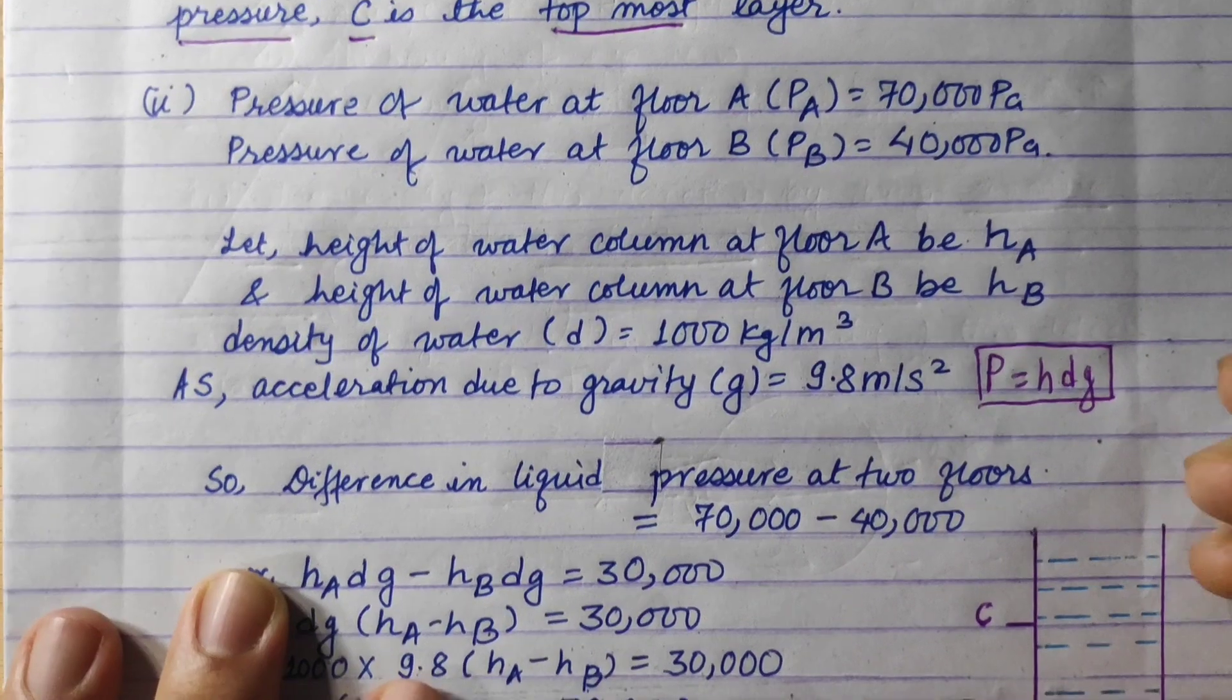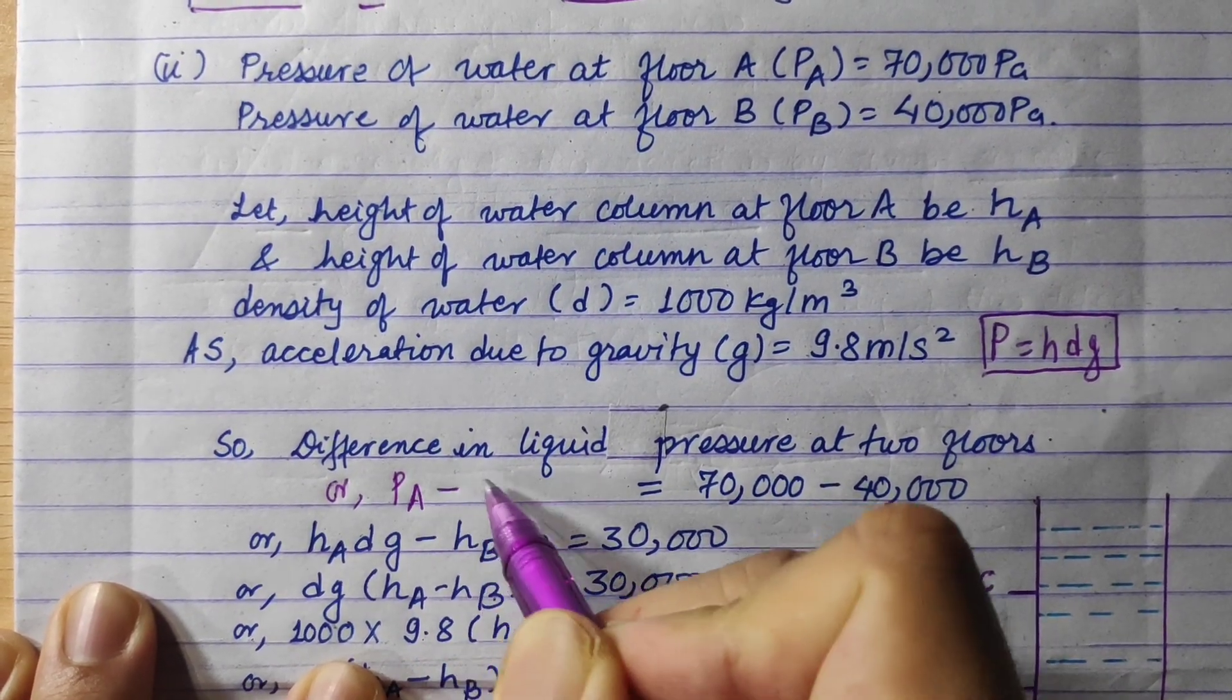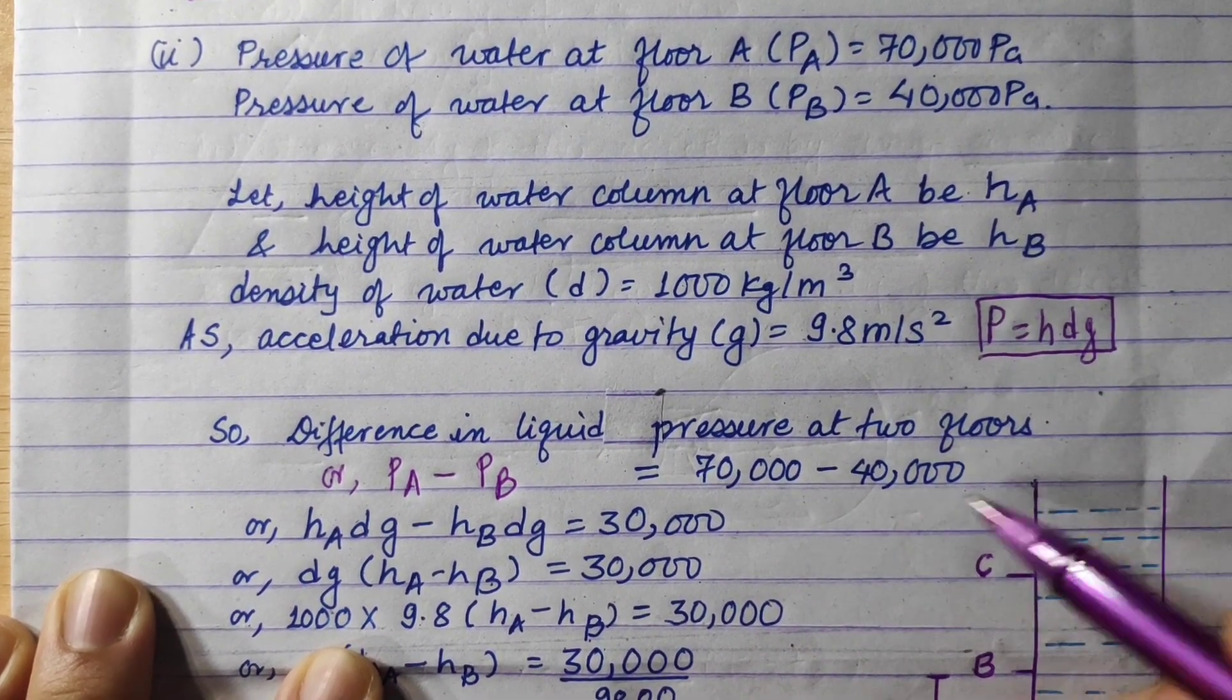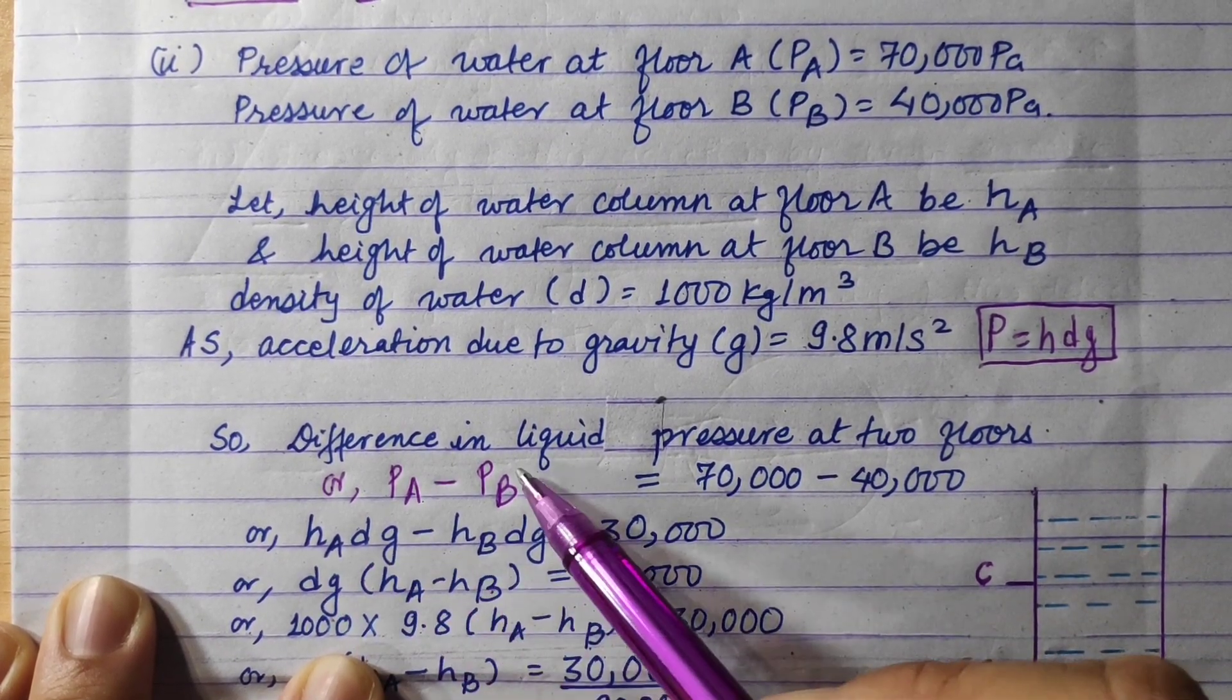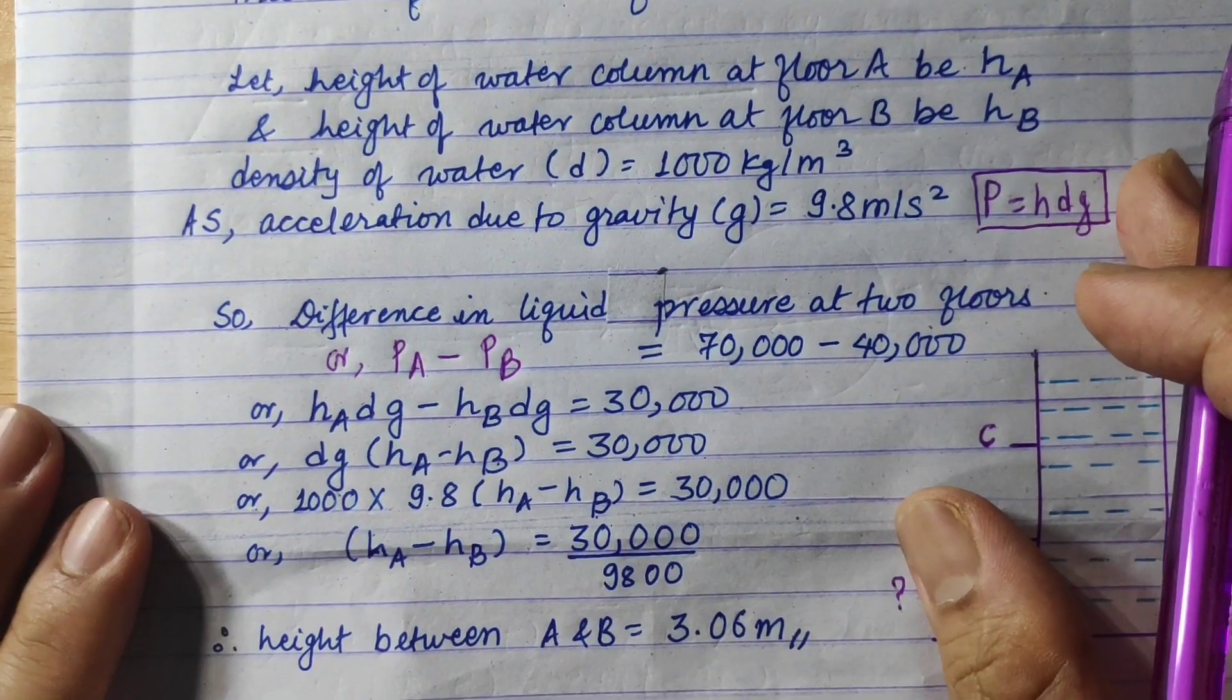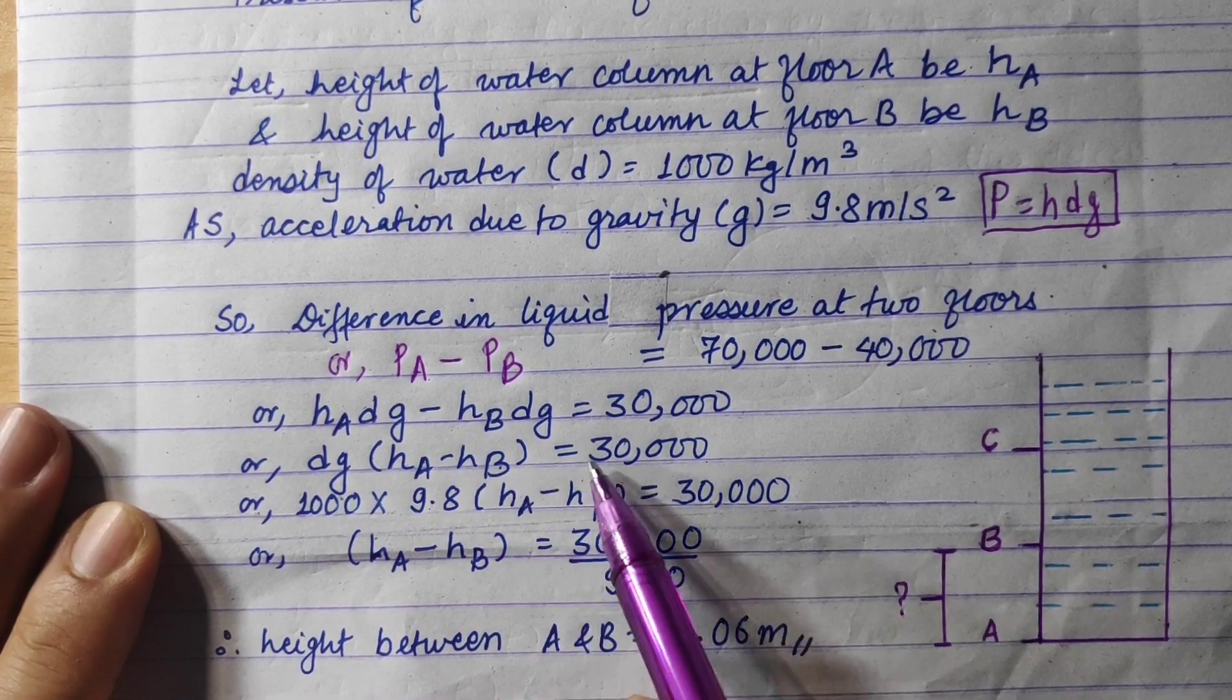So this difference in liquid pressure, we can write as PA minus PB equals 70,000 minus 40,000. Now PA is hA times dg minus PB which is hB times dg, which equals 30,000. Taking dg common, we get dg times (hA minus hB) equals 30,000.